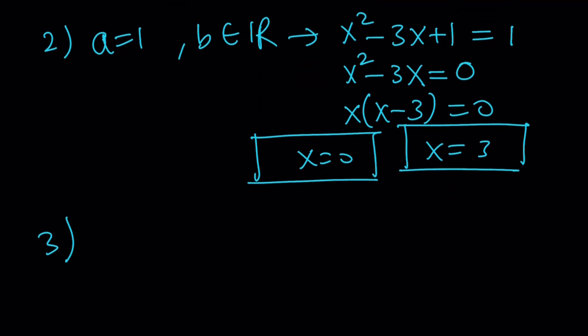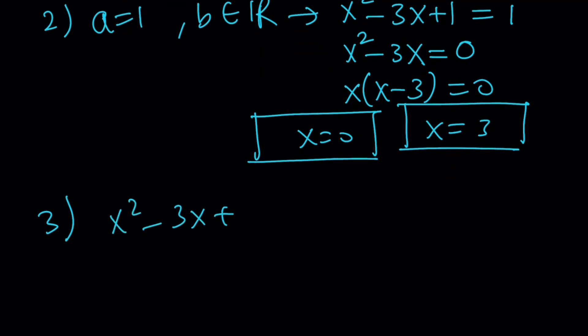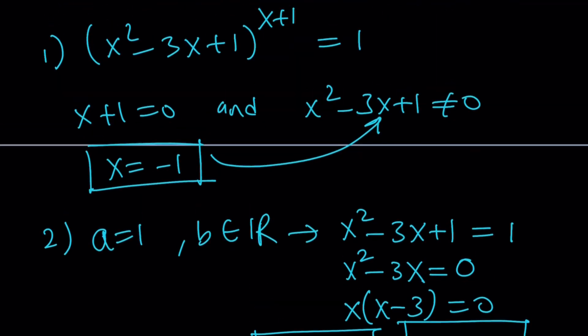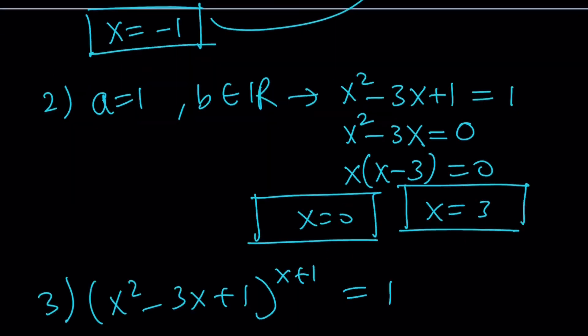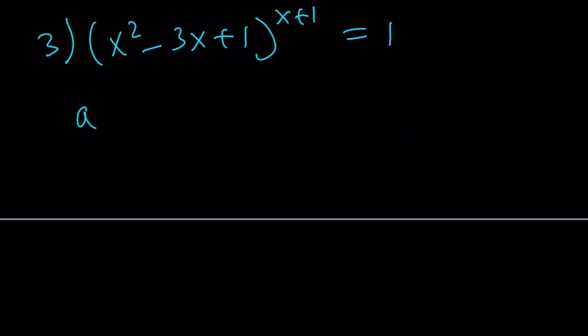The third case, again, my original equation was this one. The third case scenario, I'm looking at a equals negative 1, so the base being negative 1, and b is even. Of course this is the integer case. So if a is negative 1, x squared minus 3x plus 1 equals negative 1, and x plus 1 is even.